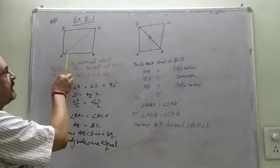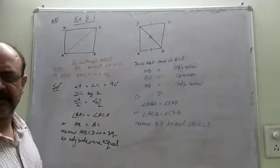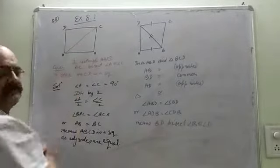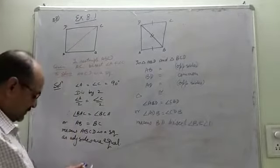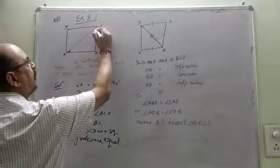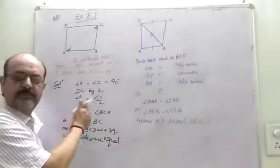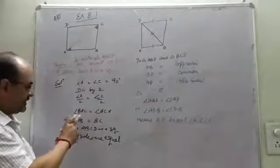Angle A is 90 degrees, angle C is 90 degrees, angles of the rectangle. If I divide it, this angle half will be equal to half of C. Half of A will be equal to half of C. What does it mean?